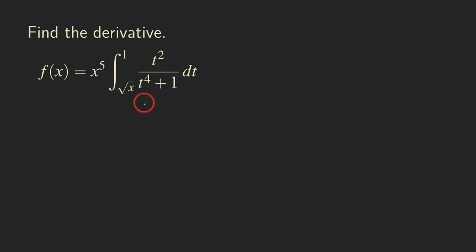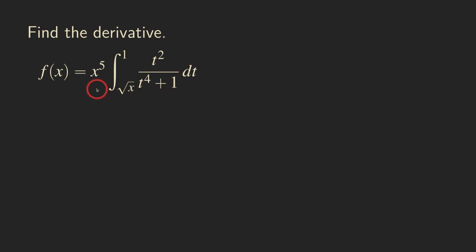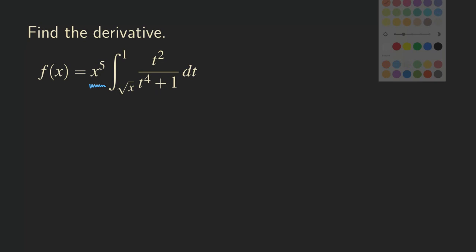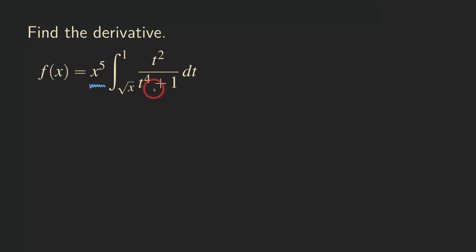Hello, everyone. Let's look at this function here. We want to find the derivative of this function. When you look at it, you can see that it's x to the fifth times this integral. And so that's a product — a product of two functions. The first function is x to the fifth, and the second function is this integral here.